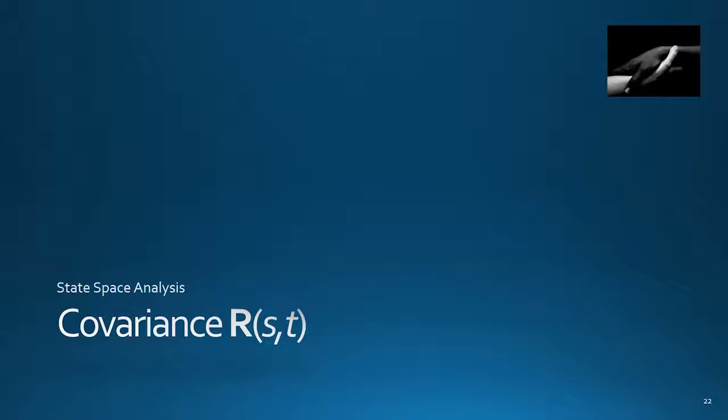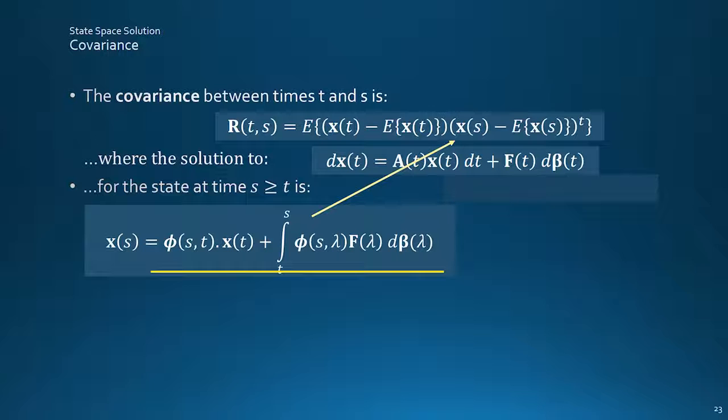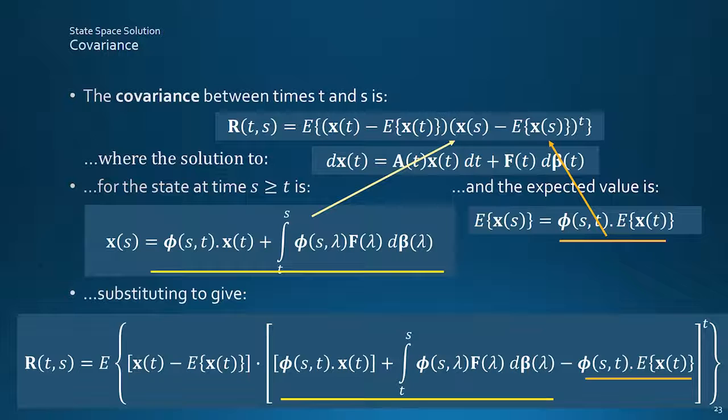Moving on from the mean to the covariance, where we can drop offsets and deterministic inputs to concentrate on noise strength. It is built from the general covariance function, by plugging in the solution to the differential form state equation for X at time S, from a starting time T, and with the previous result for the expected value of the system response to zero mean white noise, giving this lot.